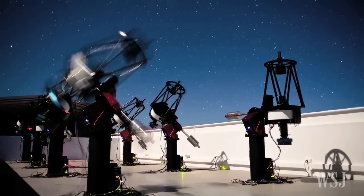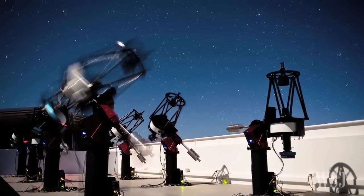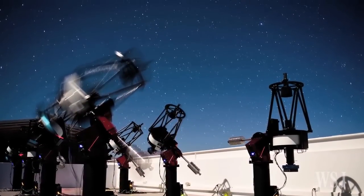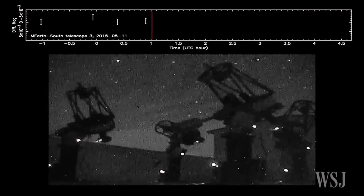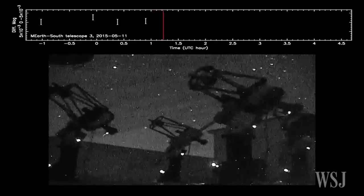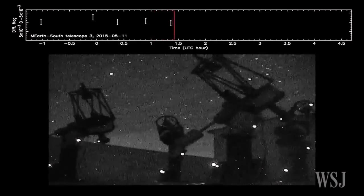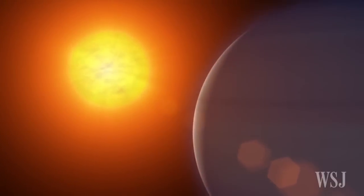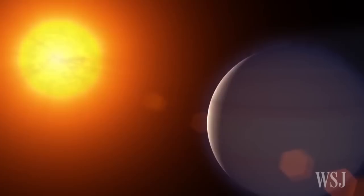They discovered the exoplanet in May 2015 using robotic telescopes located in the mountains of Chile. After zooming in on it, they found that the star's brightness dimmed slightly every 1.6 days, a clear signal that a planet regularly passes in front of its star, the scientists say.